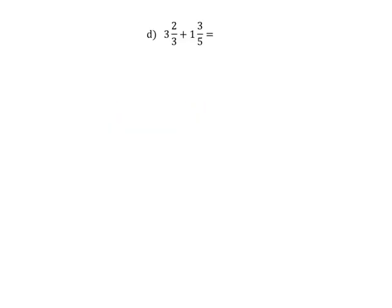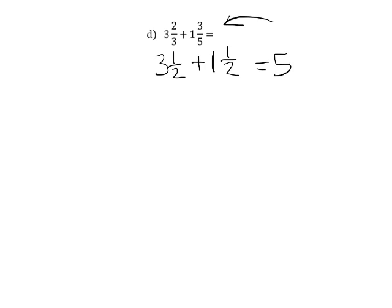For this problem, we have 3 and 2/3 plus 1 and 3/5. And we're going to begin with a little bit of estimation, because it's kind of good to do that. We know that 3 and 2/3 is a little bit bigger than 3 and 1/2. And we know that 1 and 3/5 is a little bit bigger than 1 and 1/2. And so 3 and 1/2 plus 1 and 1/2 is going to equal 5. So we know that this answer has to be bigger than 5.